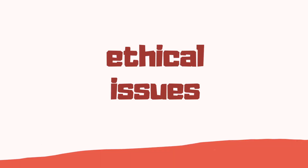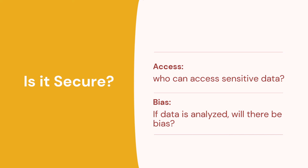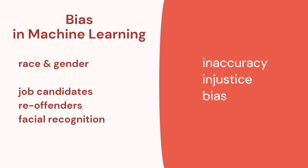There are some ethical issues to consider. Is the data secure, and who can access personal information? If we analyze the data, will there be any bias? In other machine learning approaches there has been bias against race and gender — for example with job candidates, people predicted to recommit crimes, and facial recognition systems showing bias towards one race or gender. So we have to be careful of inaccuracies and bias in data analysis.